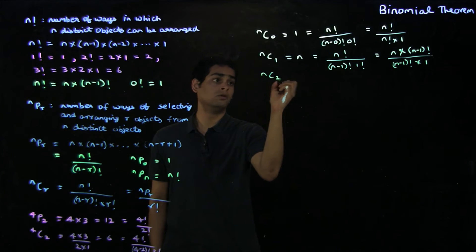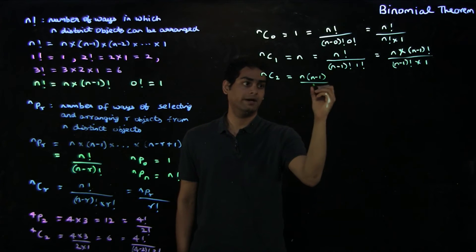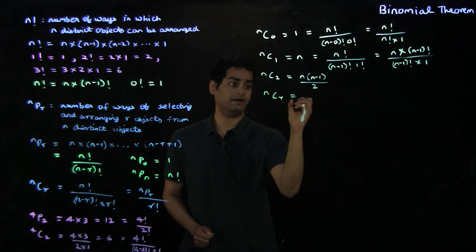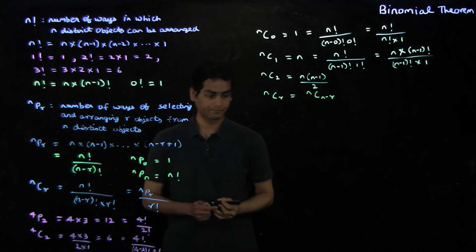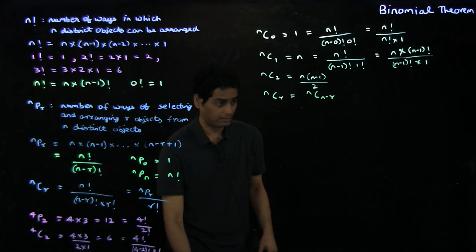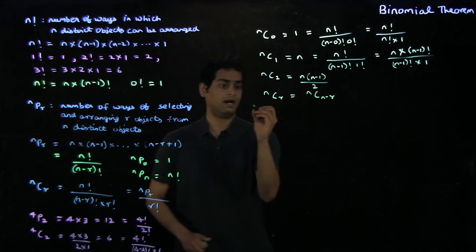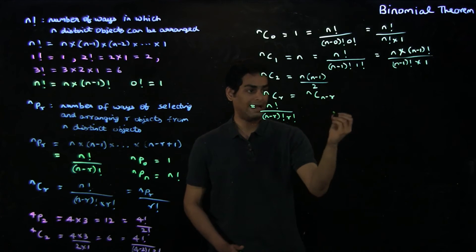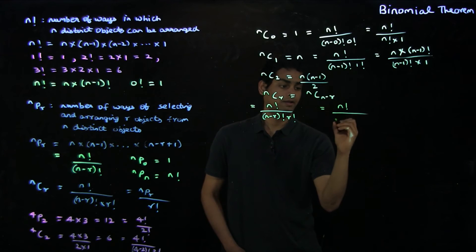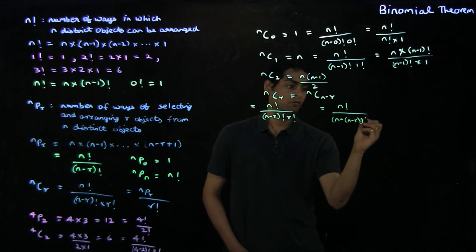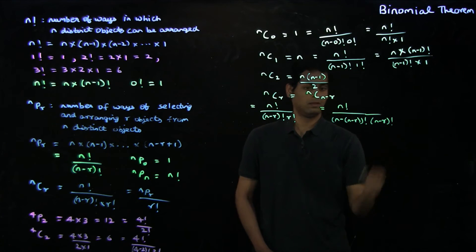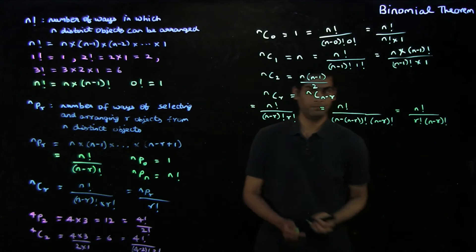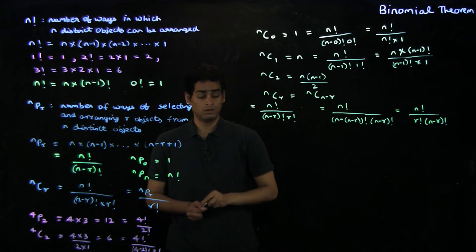Similarly, you can derive that nC2 is n times n minus 1 divided by 2 from the definition of nCr. In general, you can show that nCr equals nC(n minus r). This can be shown from the definition: nCr is n factorial divided by n minus r factorial times r factorial, and nC(n minus r) is n factorial divided by r factorial times n minus r factorial. From the definition of nCr, you can show that these two give the same result.